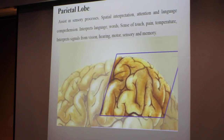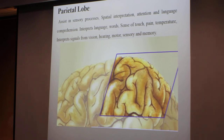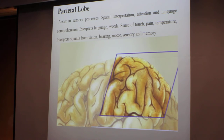The parietal lobe assists in sensory processing, interpretation, attention, and language comprehension. It also helps in interpretation of language, words, sense of touch, temperature, and signals from vision and hearing. Basically, the most sensory functions come from the parietal lobe.